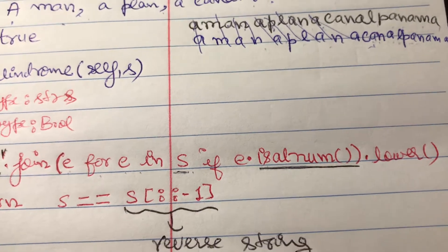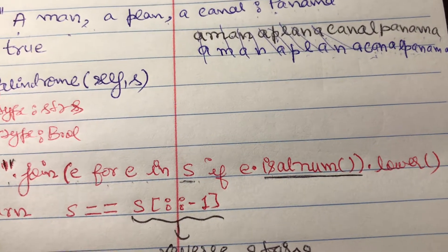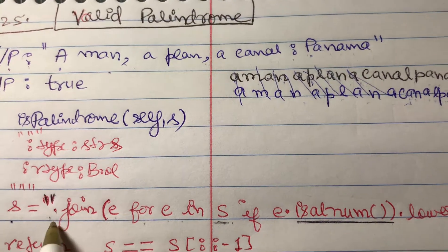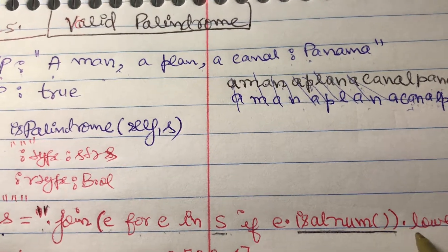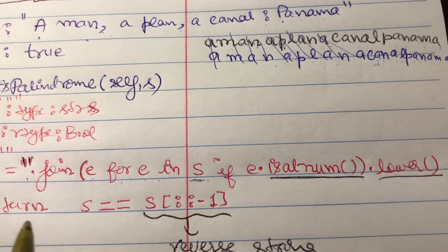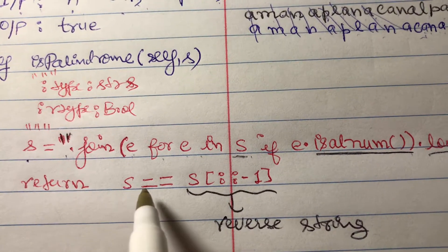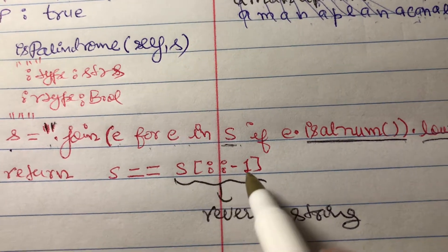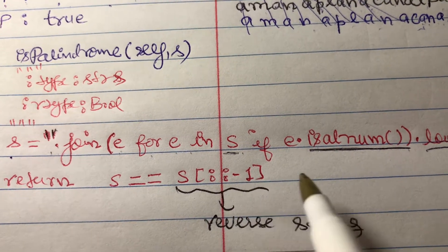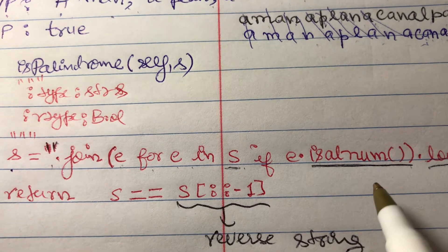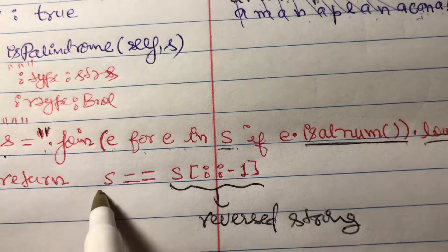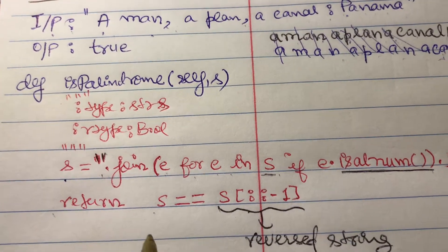'isalnum' means is alphanumeric, and then we join all the strings. After we have joined, we use another command dot lower keyword which converts string to lowercase letters. Now we return 'yes' is same as 'yes[::-1]'. So '[::-1]' is reversing the string or reading the string from end to the start, basically the reversed string. If both are same, the palindrome is valid and we return.